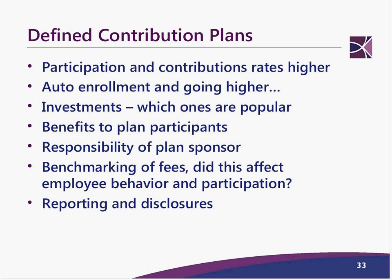We're seeing participant contribution rates higher and auto-enrollment going higher, often coinciding with the improving economy. In terms of investment trends, mutual funds, collective trusts, and insurance contracts are popular. The trend is more avoidance of Level 3 assets — with all the publicity and requirements around Level 3, more plans are trying to avoid those types of assets. Benefits to participants have also been increasing; the matches are back and benefits are up, especially as there's a quest to find qualified workers.